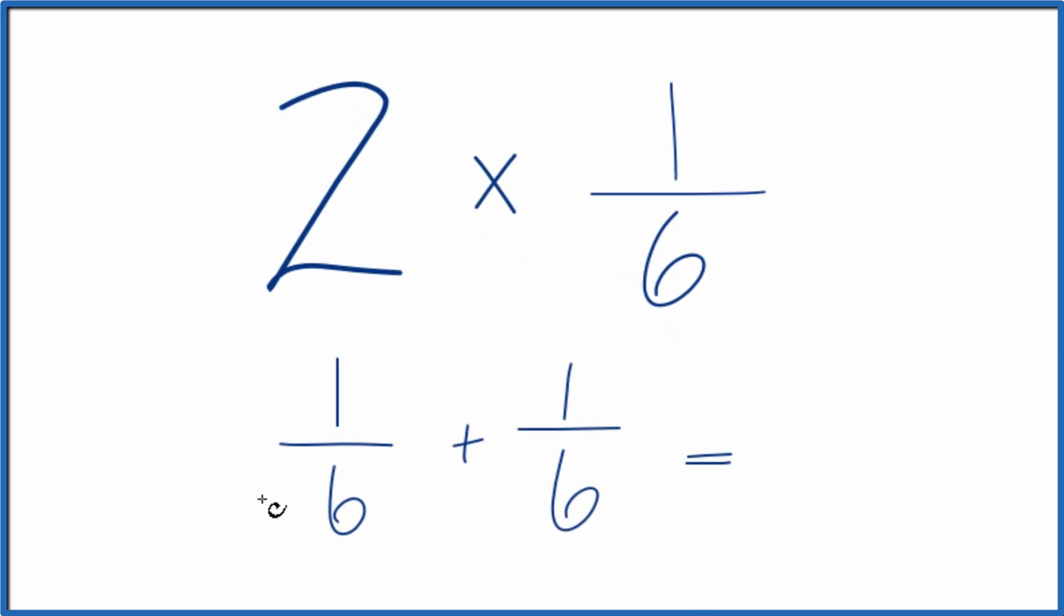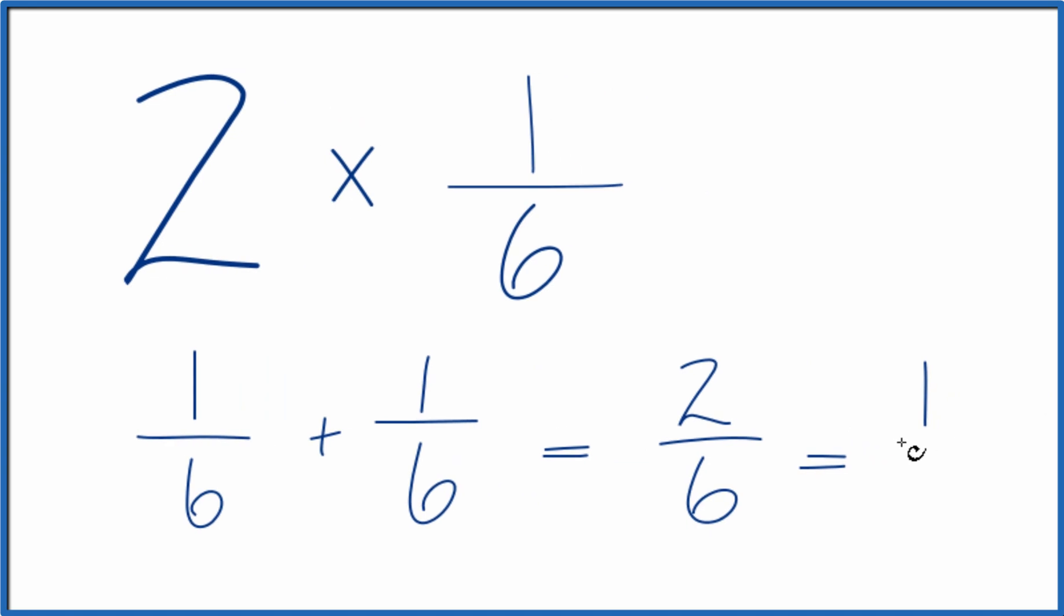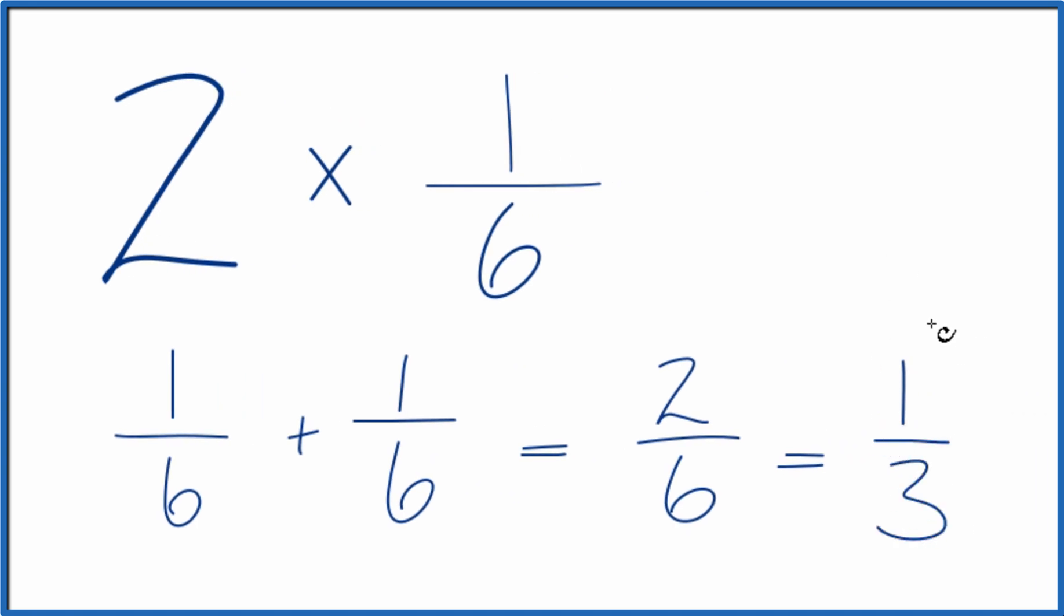When we add fractions, if we have the denominator the same, we bring that across, then we add the numerators, two-sixths, which we could simplify down to one-third. So two times one-sixth does equal one-third.